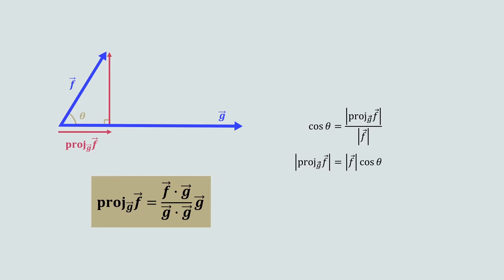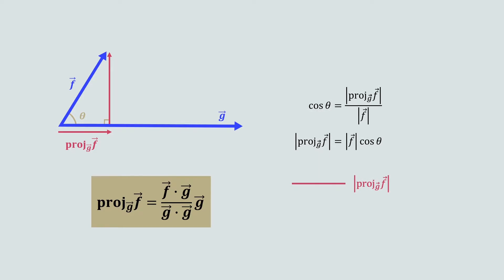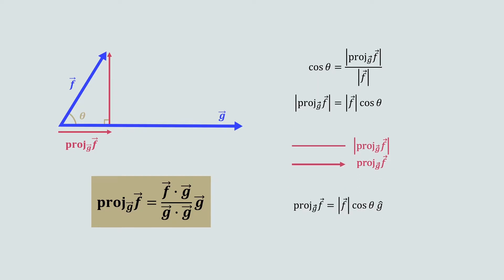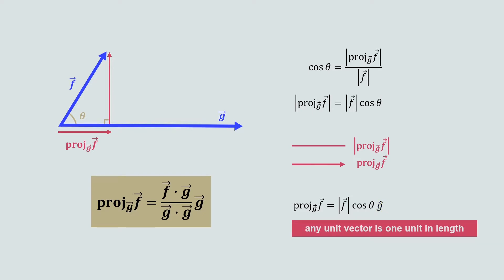But we need to find the vector, not the length of the vector. To represent this geometrically, this is the length of the vector projection, and this is the vector projection. That means we need to give this length a direction. Since the vector projection points in the direction of vector g, to find the vector projection we can multiply this length by the unit vector of g, represented by g-hat, which gives it a direction without changing the length of the vector, because any unit vector is one unit in length.